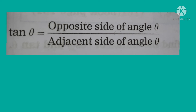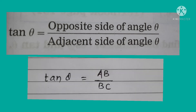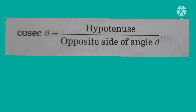For the next ratio, consider the opposite side and adjacent side of angle theta of triangle ABC. By using these two sides, tan theta is equal to opposite side upon adjacent side of angle theta. Symbolically, tan theta equals AB upon BC.